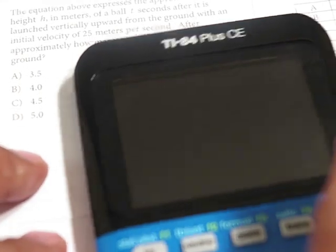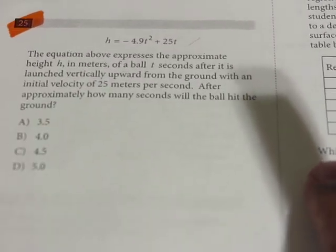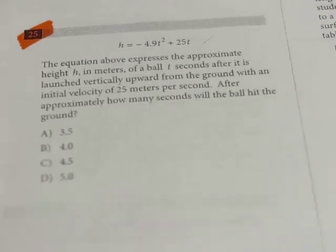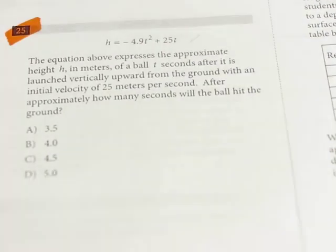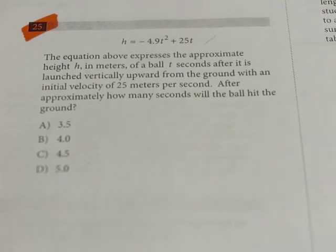I've gotten two problems here, and as I mentioned, one of these problems I've already done before. But I wanted to show you exactly what it is that they want you to be able to do. Let me read this one. It says, the equation above expresses the approximate height h, in meters, of a ball t seconds after it is launched vertically upward from the ground with an initial velocity of 25 meters per second. After approximately how many seconds will the ball hit the ground?